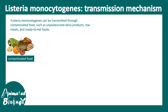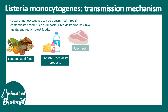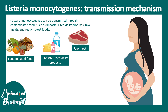Listeria monocytogenes can be transmitted through contaminated food such as unpasteurized dairy products, raw meats, and not properly washed vegetables. These are the key sources where Listeria can be present and contaminate food.